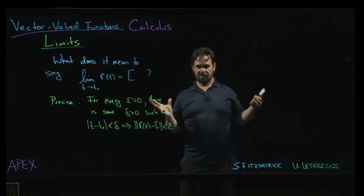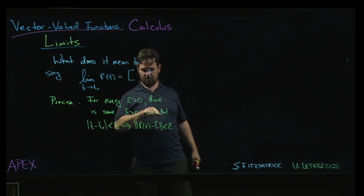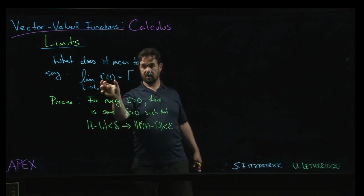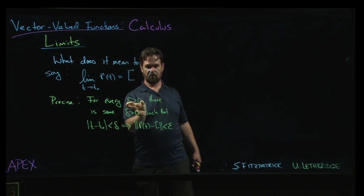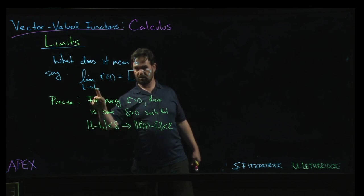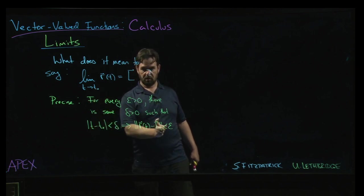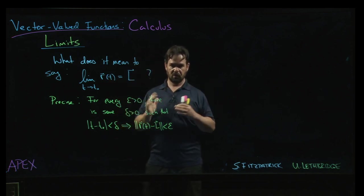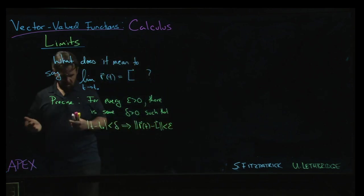So what is this saying in more imprecise language? What it's saying is that we can make our vector-valued function r(t) as close as we want to L in the sense of: give me any measure of closeness that you want. That's what the epsilon represents. How close together do you want them? And no matter how close together you want them, you can find a t value sufficiently close to this reference point t0, so that when t is close enough to t0, r(t) will be that measure of closeness that you're looking for from L. You can make it as close to L as you want.